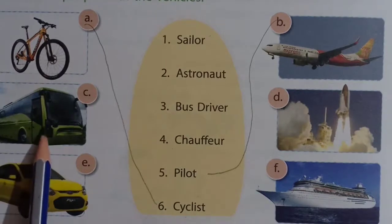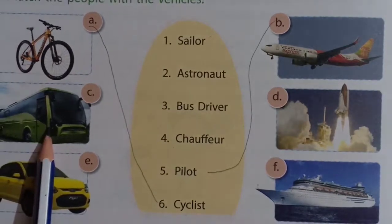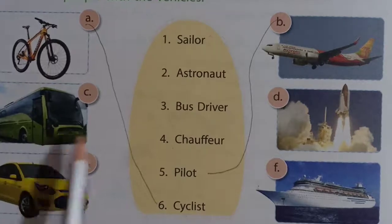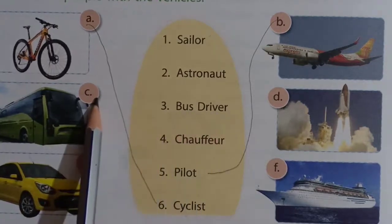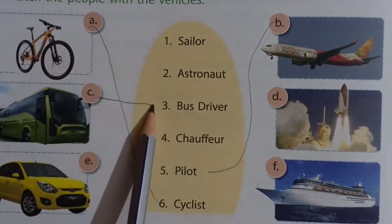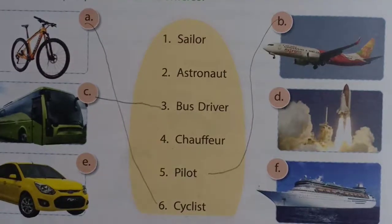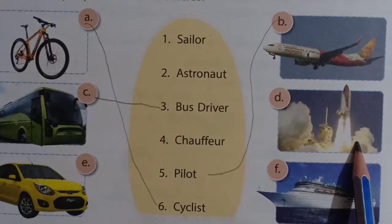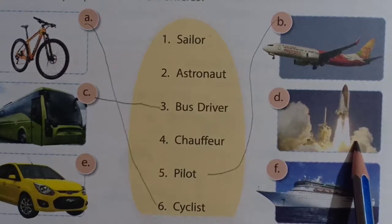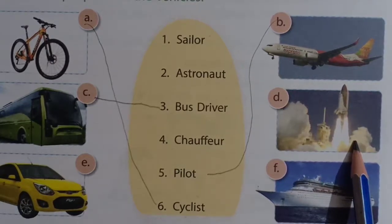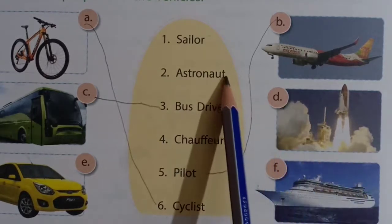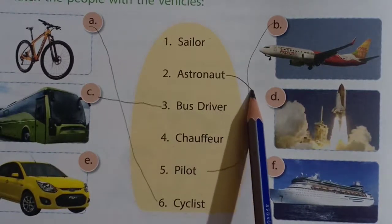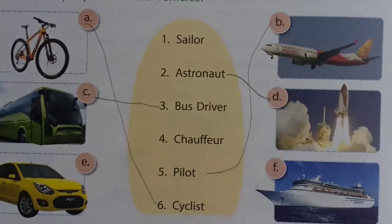Number C. This is a bus. Who drives a bus? Bus driver. So draw a line from C to 3. D — what is it? Rocket. Astronaut goes in the rocket.